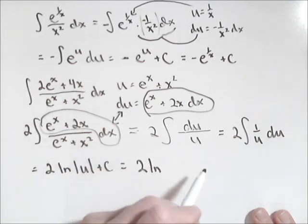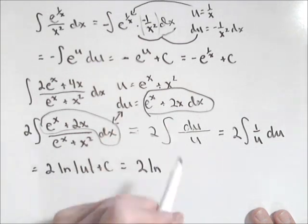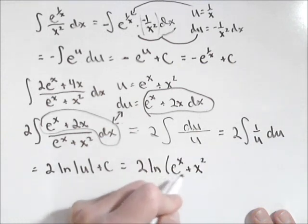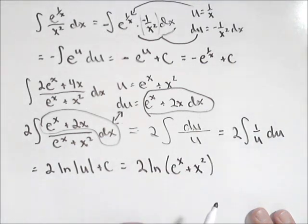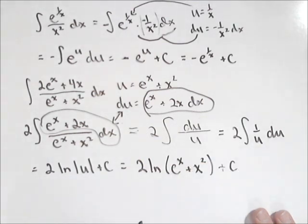So two natural log. Our u in this case was e to the x plus x squared, which is always positive, so we don't need absolute value. It wouldn't make it wrong. We could just use parentheses plus C. So there's a couple involving u-substitution.